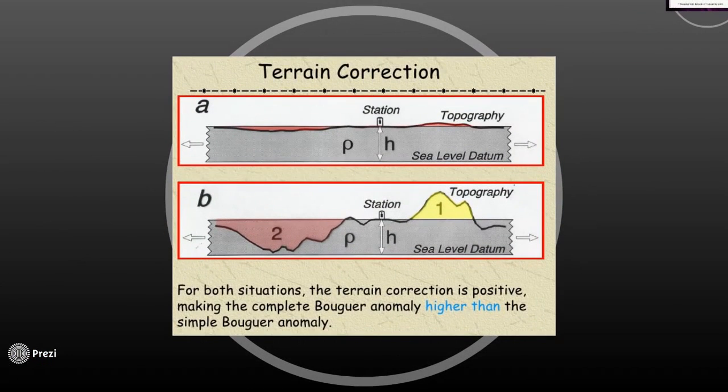The terrain correction is the correction for the Bouguer correction. These corrections always come together. For that method, we have to use a graphical correction.